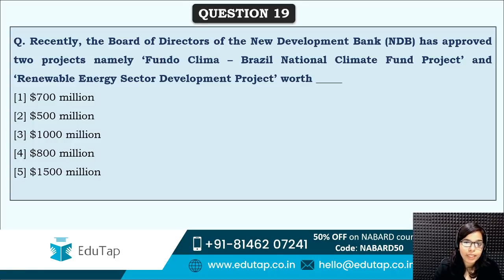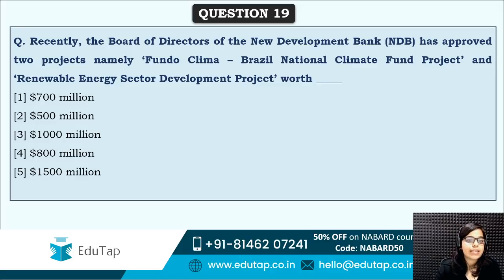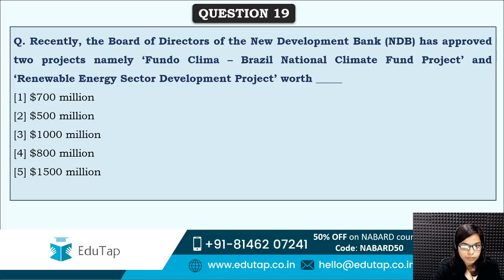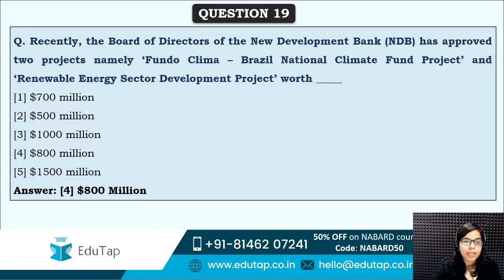Next: the board of directors of the New Development Bank has approved two projects — the Fundo Clima Brazil National Climate Fund project and the Renewable Energy Sector Development project. What is the total worth of these projects? Some of you are saying four, some are saying three. The correct answer is option four — $800 million. These projects worth $800 million have been approved by the New Development Bank.